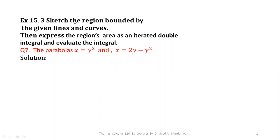The statement of the problem is: sketch the region bounded by the given line and curve, then express the region's area as a double integral and evaluate the integral. In question number 7, the curves given to us are the parabolas x = y² and x = 2y − y².